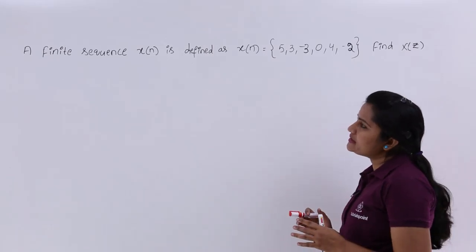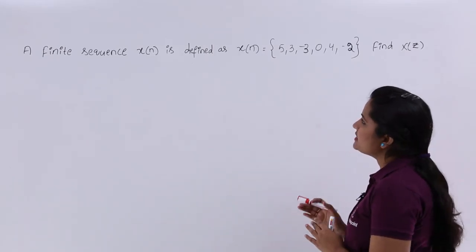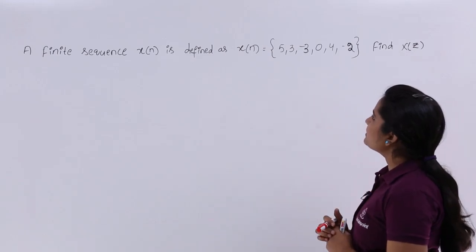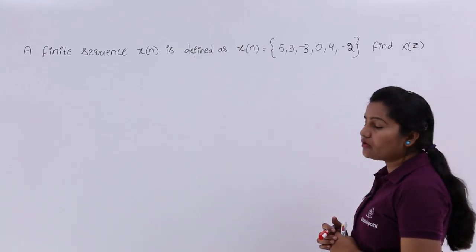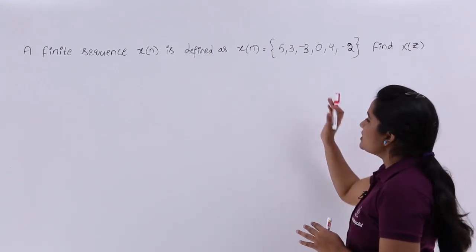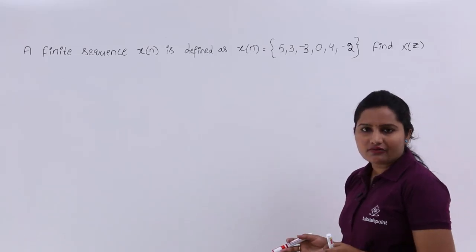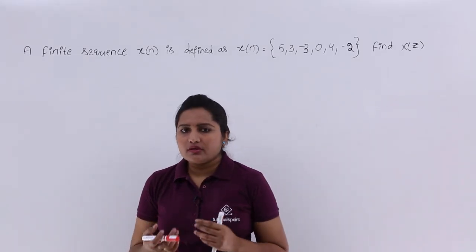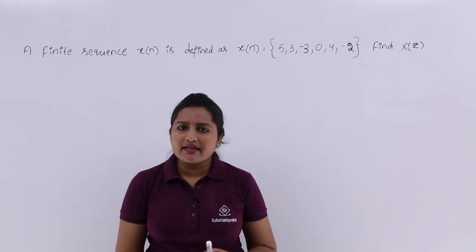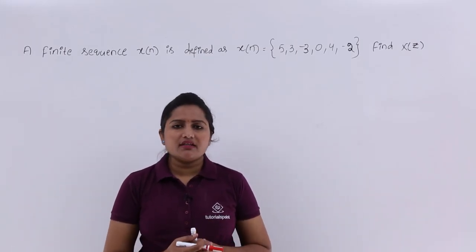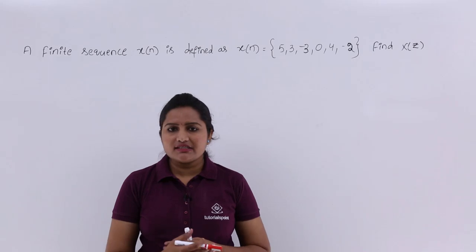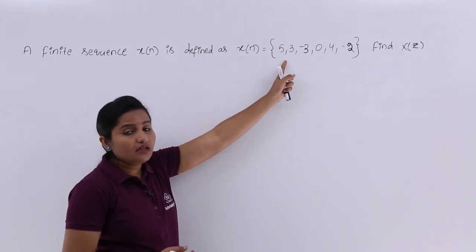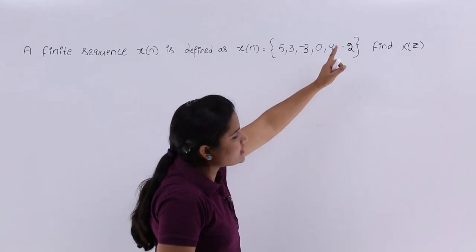First, observe the problem. A finite sequence x of n is defined as x of n equal to {5, 3, -3, 0, 4, -2}. This is the finite sequence x of n — a finite signal. We can treat x of n as a discrete signal, and here that discrete signal is a finite signal which has only 6 samples.